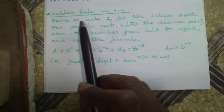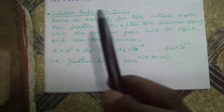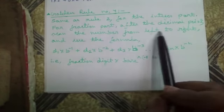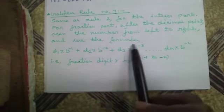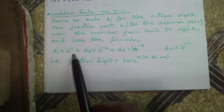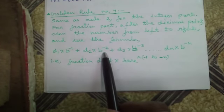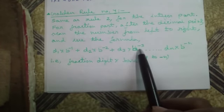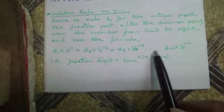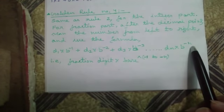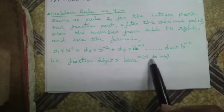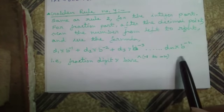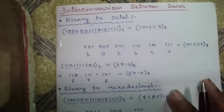Golden Rule Number 4: Same as Rule 2 for the integer part. But for the fraction part, after the decimal point, scan the number from left to right and use the formula: d1×b⁻¹ + d2×b⁻² + d3×b⁻³, going on to dn×b⁻ⁿ. That is, each fraction digit multiplied by base to the power of minus 1 to minus n, where n is the number of fraction digits.